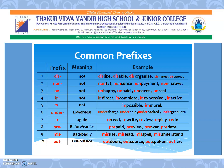IM suggests negative words or opposites: impossible, immoral. UNDER for lower or less: undercharged, underpaid, undercooked, undergraduate. RE for again: reread, rewrite, review, replay, redo. PRE for before or earlier: prepaid, preview, pre-war, pre-date. MIS for bad or badly: misuse, mislead, misspell, misunderstand. OUT for outside: outdoors, outsource, outspoken, outlaw — the meanings of 'out' and 'outside' are the same.